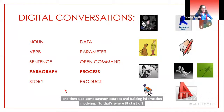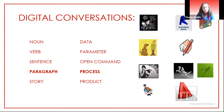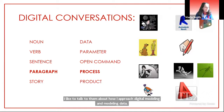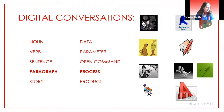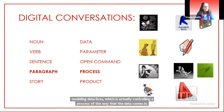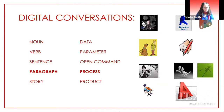What I'd like to talk about is my approach — the way I start with students — which is about the process of building up from a noun, which I see as data, and a verb, which I see as a parameter, which is actually movable data, and then moving into an open command structure, and then into a paragraph, which is where I think the core of modeling data lives. It's about controlling the process of the way data comes in, because data is pretty undifferentiated. That process begins to build a story.